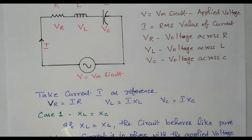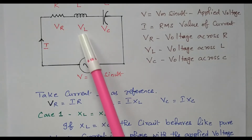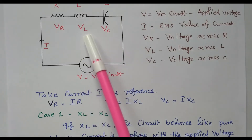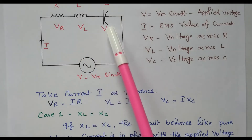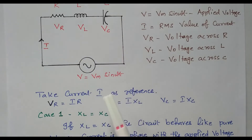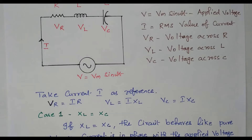The analysis of RL circuit and RC circuit is available in the previous video — the link is available in the description box. In this circuit, we have both inductor and capacitor, so based on their values, the current may be lagging or leading. Based on that, we have three different cases.